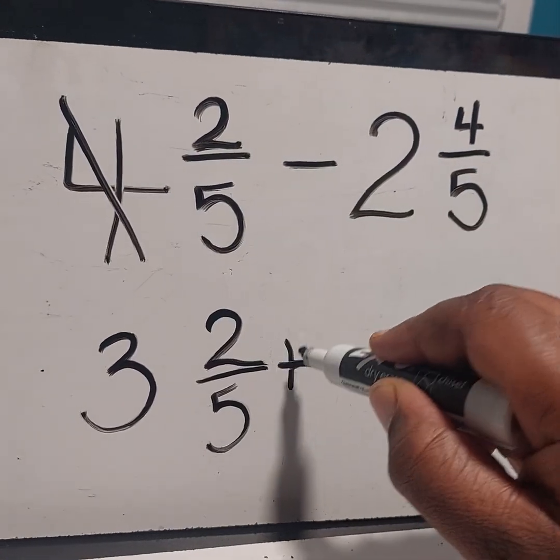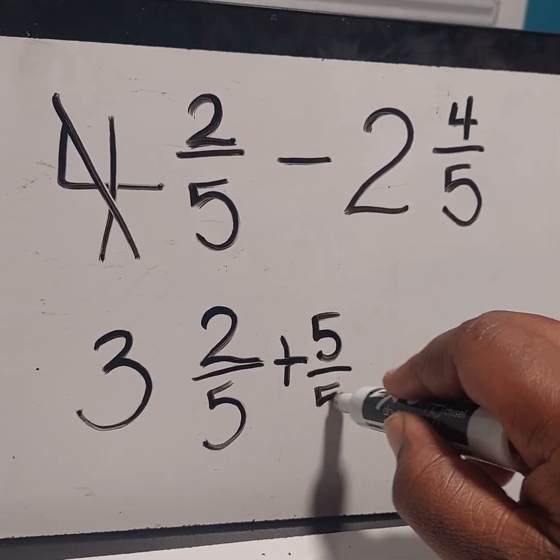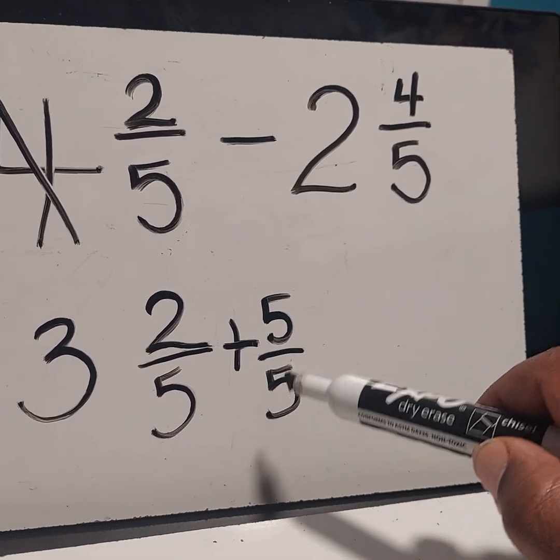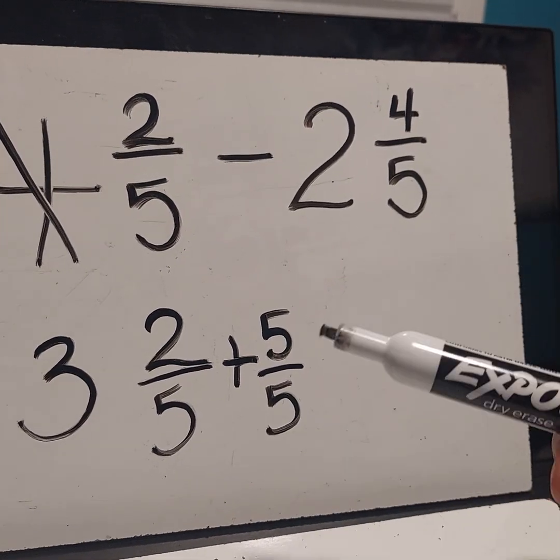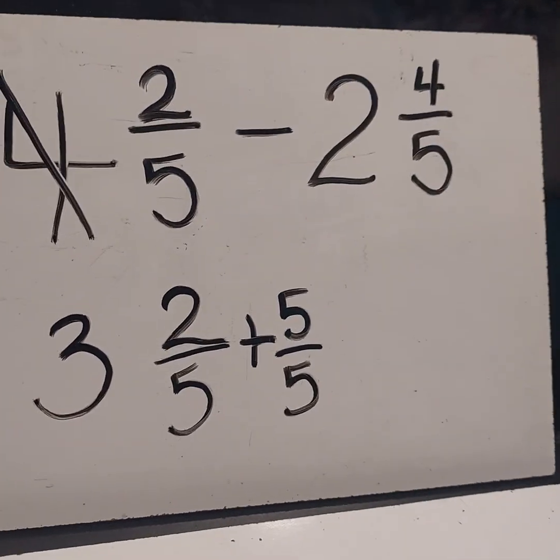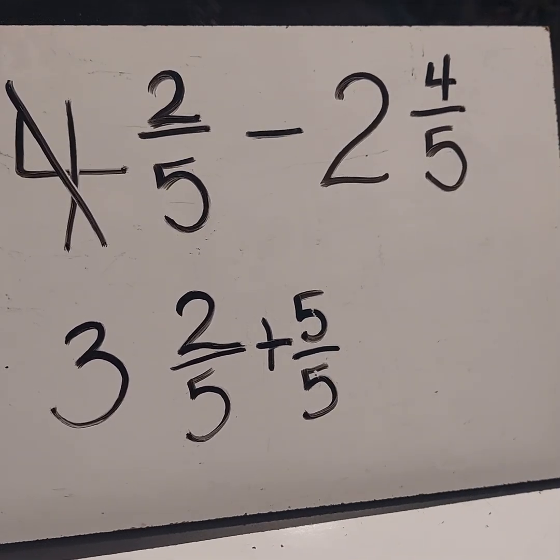But guess what I'm going to do? I'm going to represent my 1 as a fraction. It becomes 5 over 5. Now, let me tell you why I use 5. I use 5 because my denominator is 5. And I also know that 5 over 5 is equal to 1.